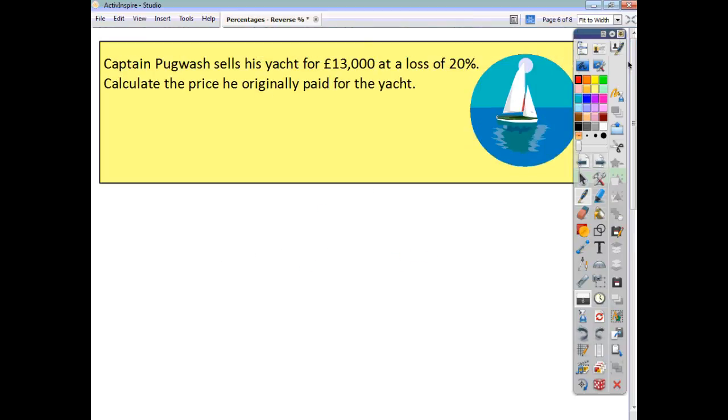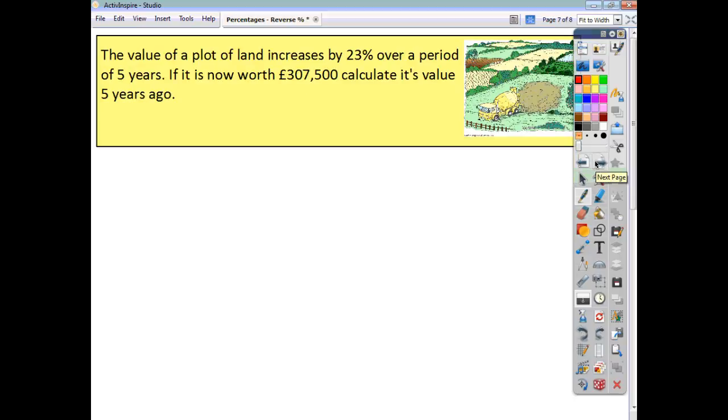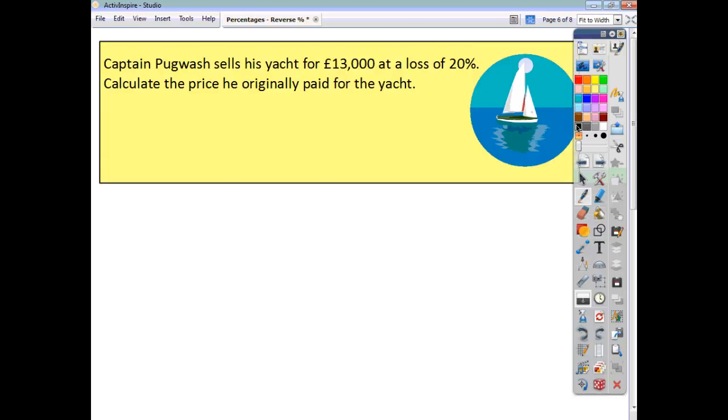So here's a couple of questions that you can do yourselves. Firstly, Captain Pugwash sells his yacht for £13,000 at a loss of 20%. Find the price he originally paid for the yacht. And secondly, the value of a plot of land increases by 23% over a period of five years. It's now worth £307,500. Calculate its value five years ago. So pause the video, do this yourselves and complete your answers and see how you did.